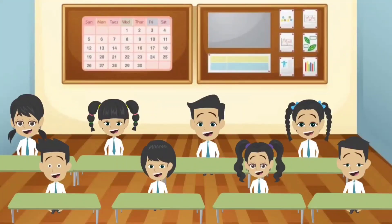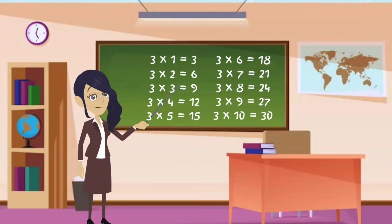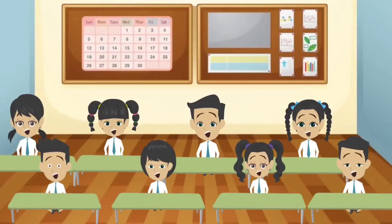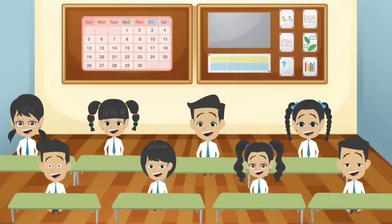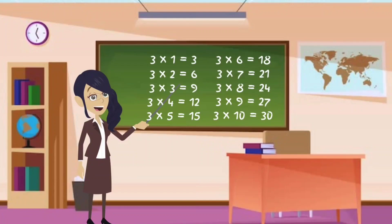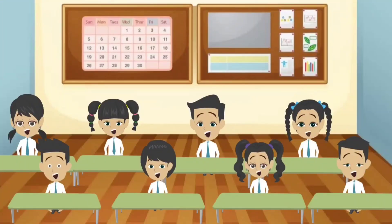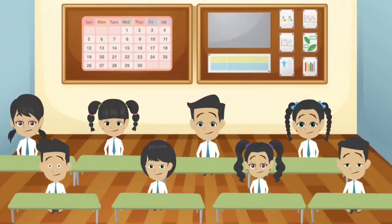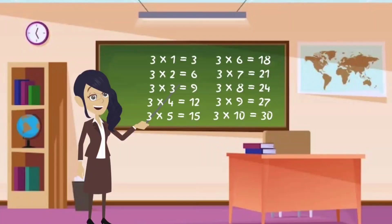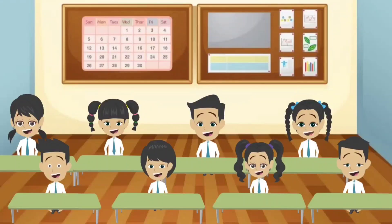Let's do this again together. 3 ones are 3. 3 twos are 6. 3 threes are 9. 3 fours are 12. 3 fives are 15. 3 sixes are 18. 3 sevens are 21. 3 eights are 24. 3 nines are 27. 3 tens are 30.